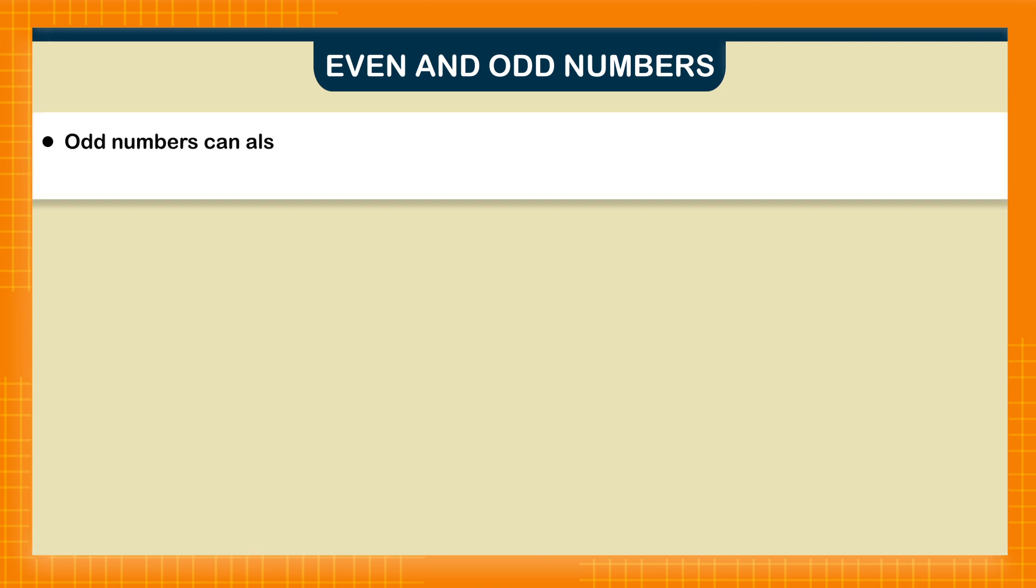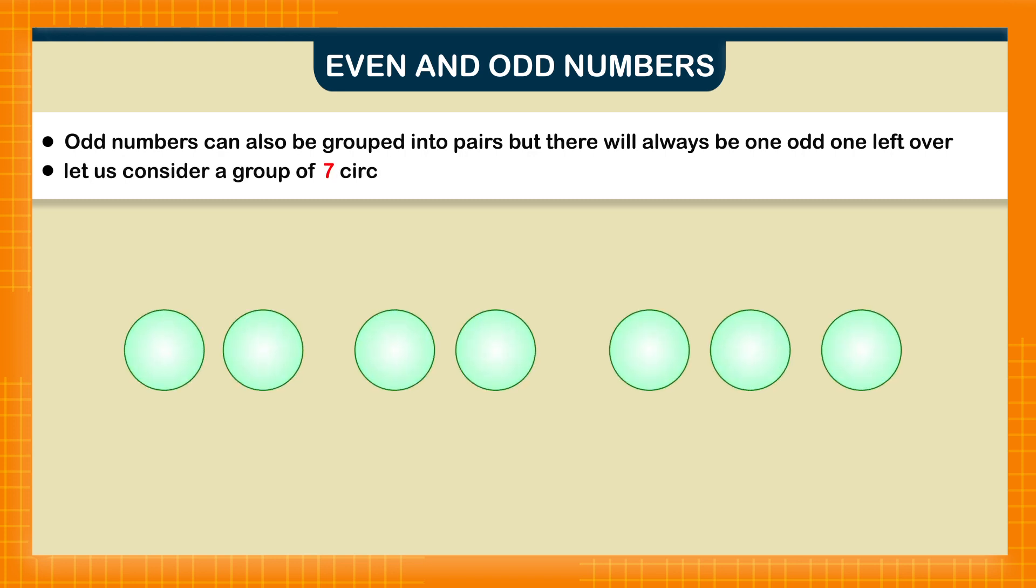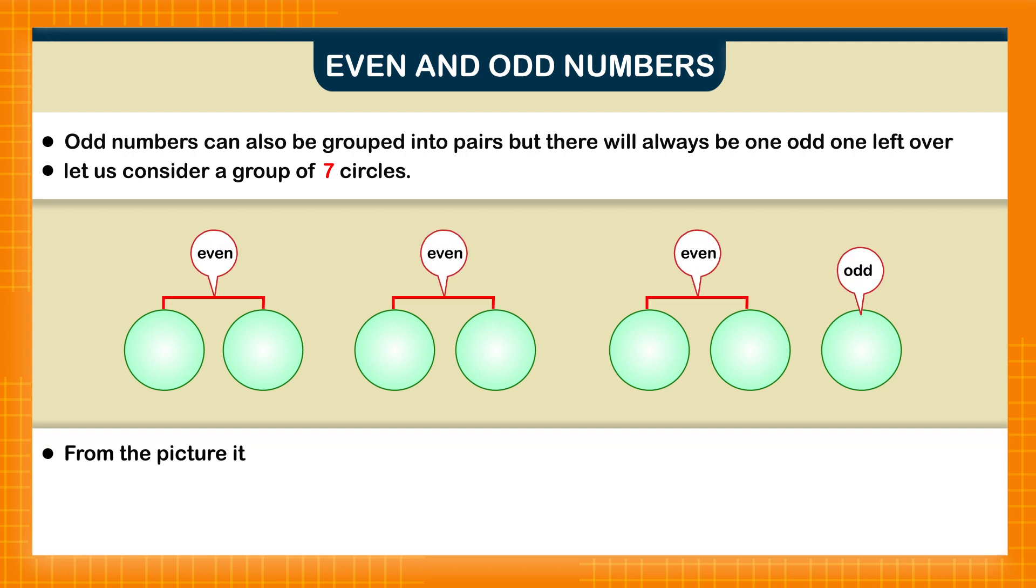Odd numbers can be grouped into pairs, but there will always be one odd one left over. Let us consider a group of seven circles. See the picture. From the picture, it is obvious that one circle does not have a pair. Therefore, seven is an odd number.